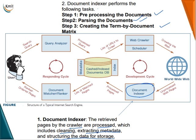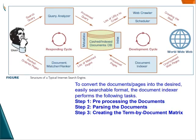The third step is creating the term by document matrix. This step involves creating a term by document matrix that maps terms to documents using weights such as term frequency, which evaluates a term's importance within the document and the entire collection. We have discussed this term by document matrix previously. So these are the three steps: preprocessing the document, parsing the document, and creating a term by document matrix.